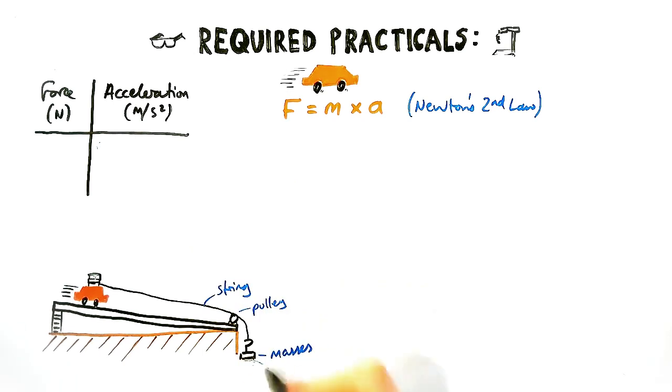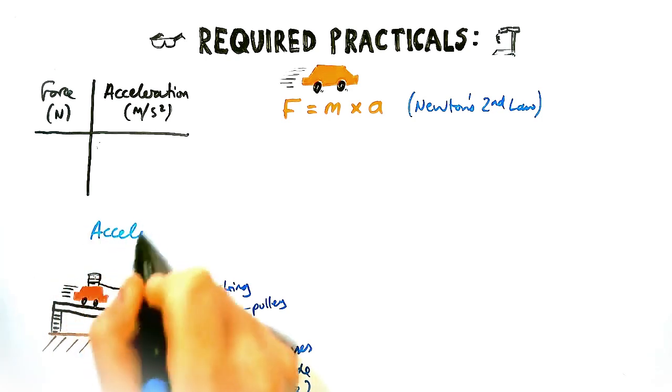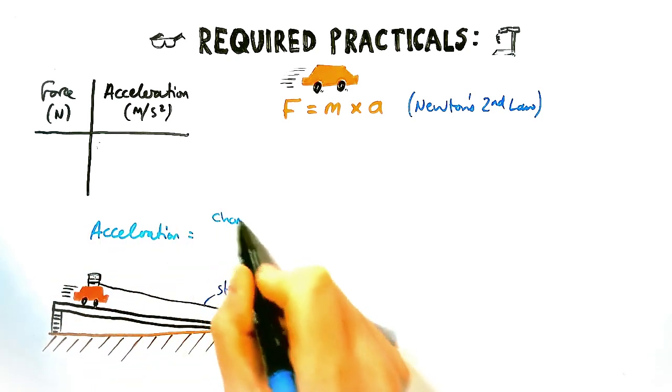Now what we're going to try and do is using Newton's second law, which is F = ma, we are going to vary the force. How we're going to do that is put masses on the end of the hanger. Don't be confused, we're not changing the mass where we are, but we're using that to change the force.